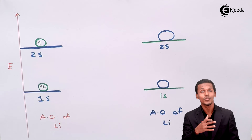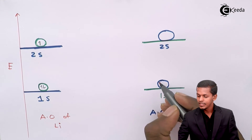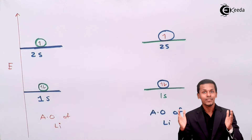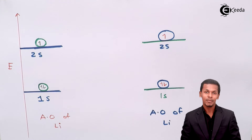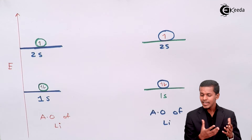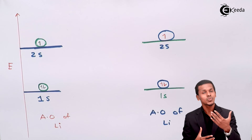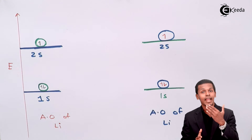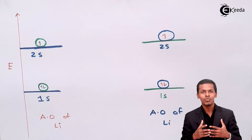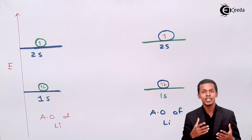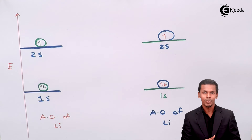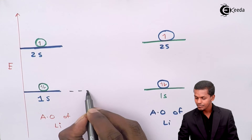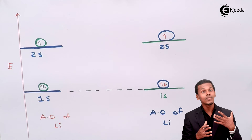We fill the electrons according to the Aufbau principle and Hund's rule. Now, we need to combine these two atomic orbitals of lithium to form molecular orbitals. The 1s orbital of lithium is very close to the nucleus. Even though it forms bonding and anti-bonding molecular orbitals, the total electrons would be four — two in the bonding orbital and two in the anti-bonding orbital — giving a bond order of zero. So the 1s orbitals have no net influence on forming a bond.